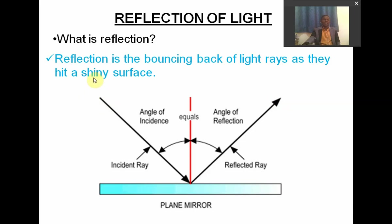Let's assume there is a source of light right here — it might be a candle, a bulb, or a torch. When switched on, it gives out a ray of light or a beam of light. The ray of light that comes out of this source is what we are referring to as the incident ray. The word incident is spelled I-N-C-I-D-E-N-T. The incident ray is the ray coming from the source of light.